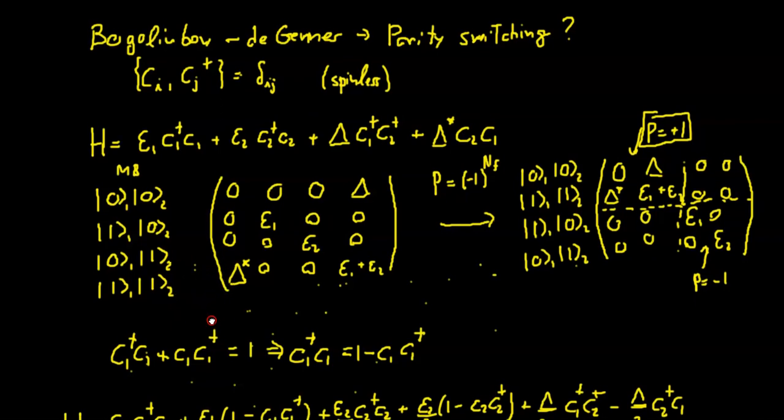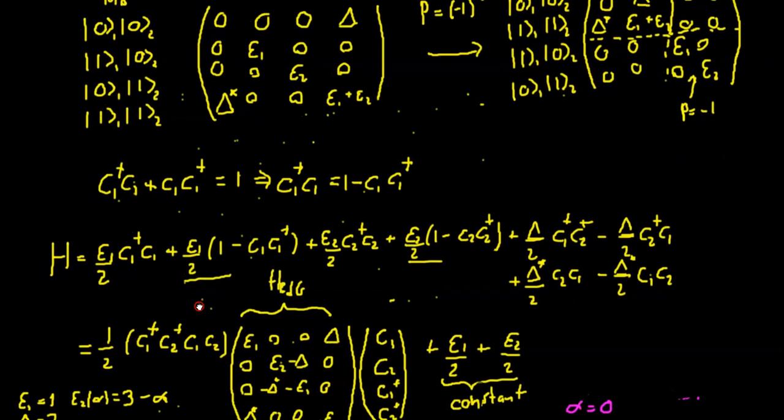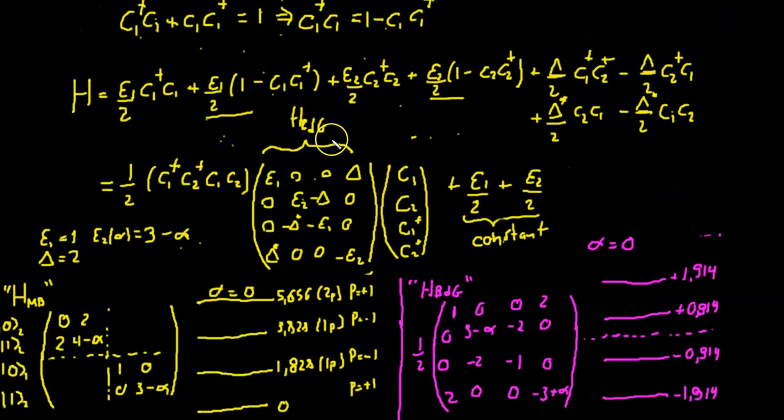And we also wrote the same Hamiltonian in the Bogoliubov-de-Gennes form, which is this one. And then in the last video, we were discussing how the two compare in terms of the spectrum.